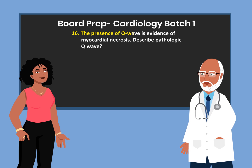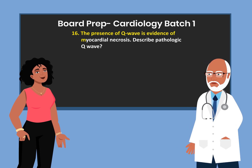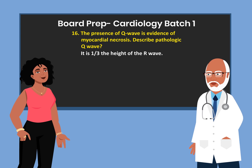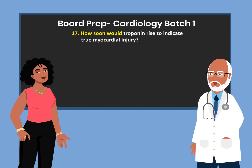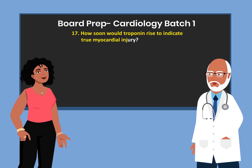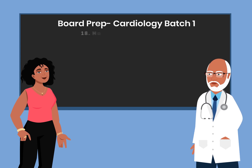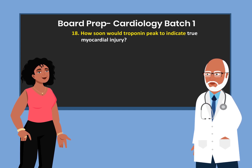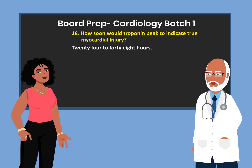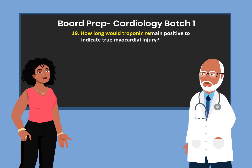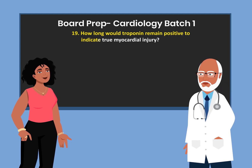The presence of a Q wave is evidence of myocardial necrosis. Describe a pathologic Q wave: it is one-third the height of the R wave. How soon would troponin rise to indicate true myocardial injury? Three to five hours after injury. How soon would troponin peak? 24 to 48 hours. How long would troponin remain positive? Up to 14 days.